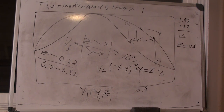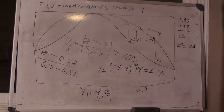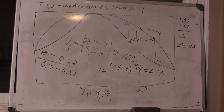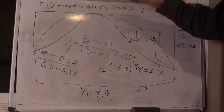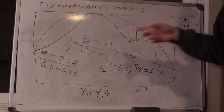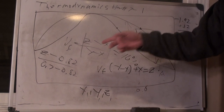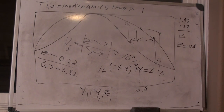The key thing is: any time vapor fraction is mentioned, use the formula VF = (z − x) / (y − x). This works as long as you know the temperature and pressure, because then x and y are fixed. You're changing the composition, and this formula tells you what that final z needs to be.